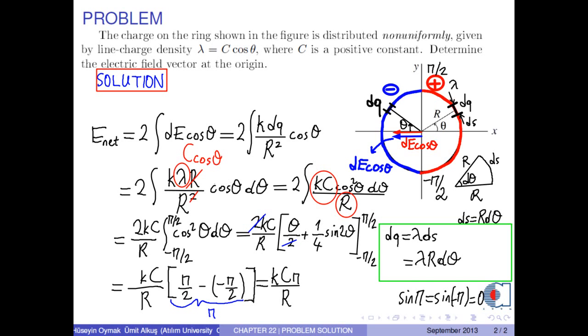So, the magnitude of the electric field is obtained as k times c times pi over r. As you see, the direction of the electric field is negative i hat, that is negative x direction.